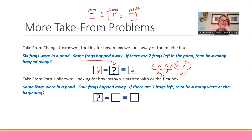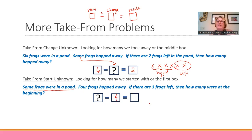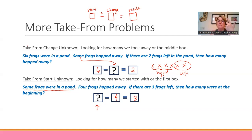Our last form is 'take from start unknown' — we don't know how many we're beginning with, but we know how many left and how many remain at the end. For example: some frogs were in a pond, four hopped away, if there are three frogs left, how many were there at the start? To recap: take from refers to subtraction, and the three variations are result unknown, change unknown, and start unknown. For addition, all three are add to: start unknown, change unknown, and result unknown. Three for addition, three for subtraction.